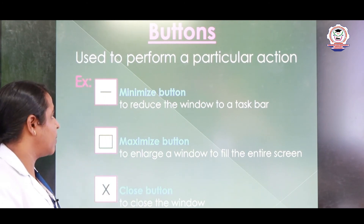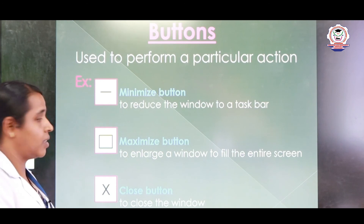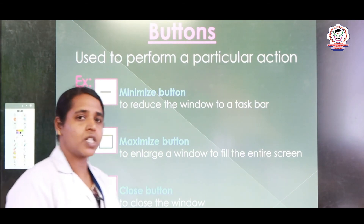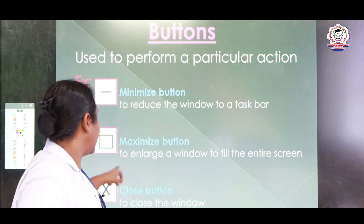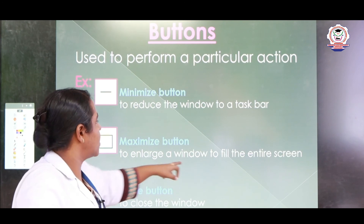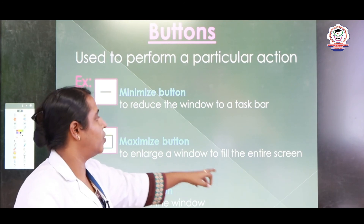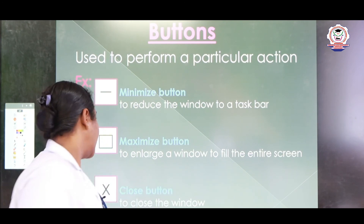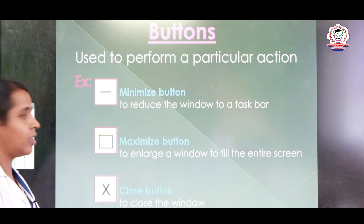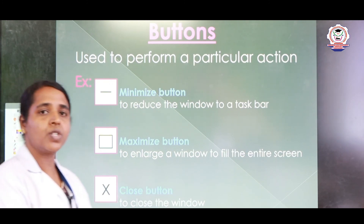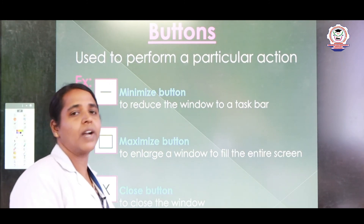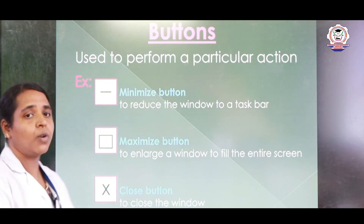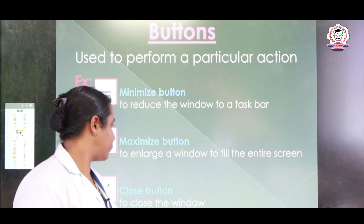Next, the maximize button — it enlarges the window to fill the entire screen. Next, the close button — if you want to close the window, you click the cross button and the whole window will be closed.